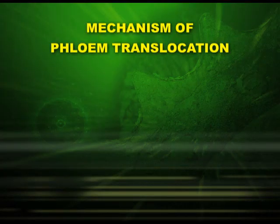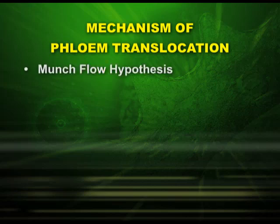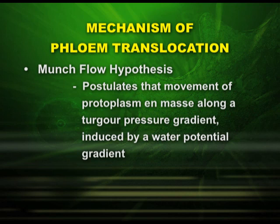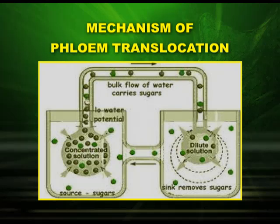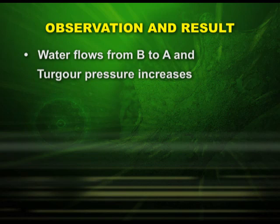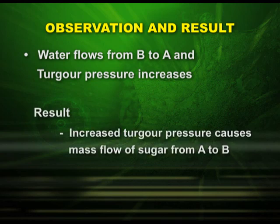Now let us see the mechanism of phloem translocation. It is explained by a hypothesis called the Munch flow hypothesis, which postulates that the movement of protoplasm along a turgor pressure gradient is induced by a water potential gradient. This hypothesis can be explained by the mass flow model, which consists of two reservoirs A and B — one containing a concentrated solution and the other containing a dilute solution with sugars. Water flows from B to A and the turgor pressure increases, causing mass flow of sugar from A to B.